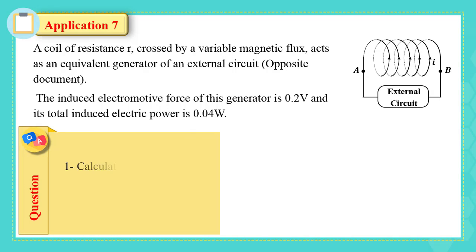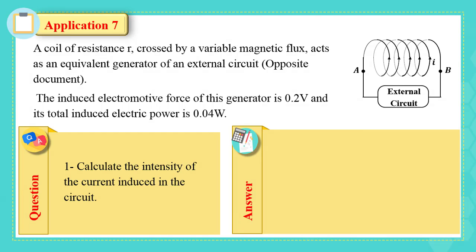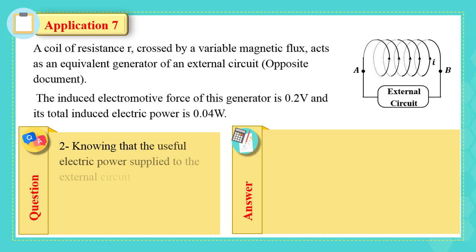1. Calculate the intensity of the current induced in the circuit. P electric equals E multiplied by I, so I equals P electric over E. I equals 0.04 over 0.2, which is equal to 0.2 ampere.